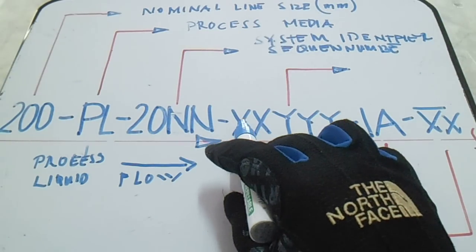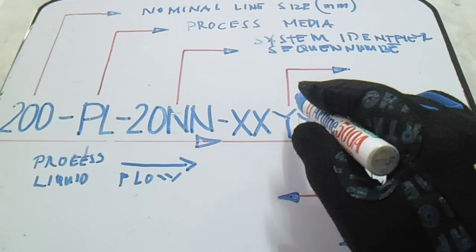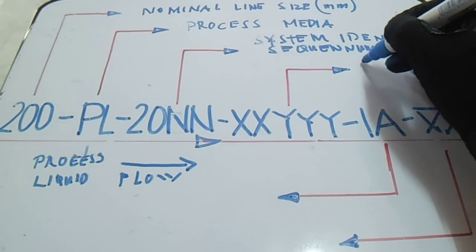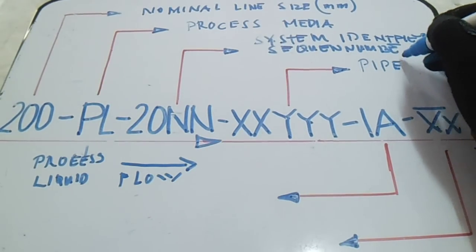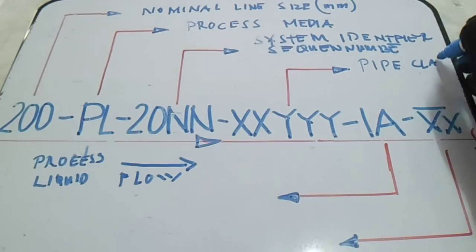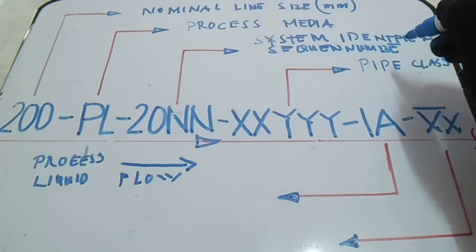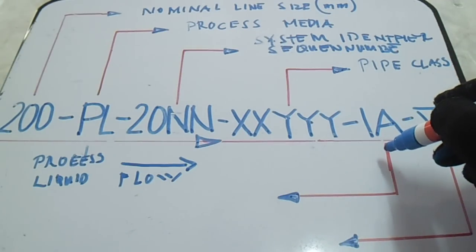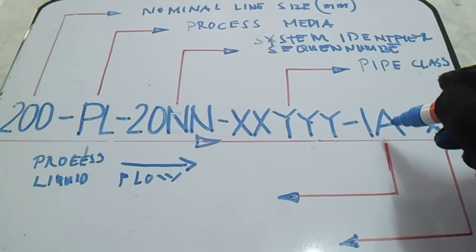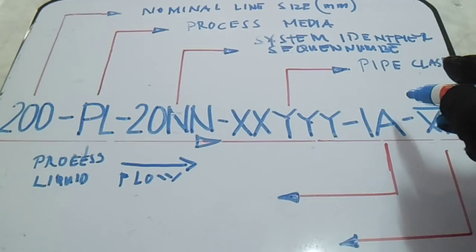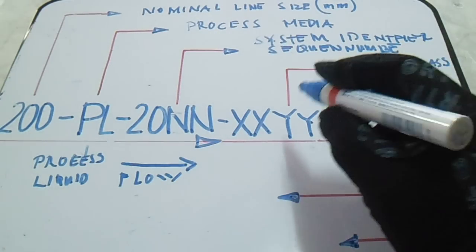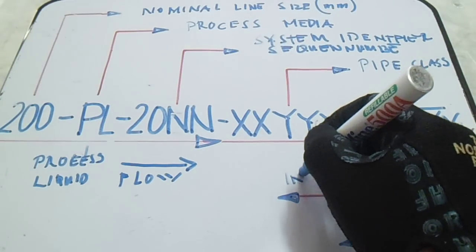Next is XXYYYY. The meaning of this is our pipe class. And IA — the meaning of IA is this is an insulation type. So this is an insulation type.